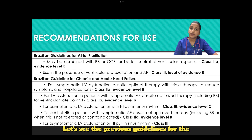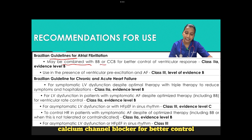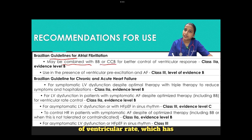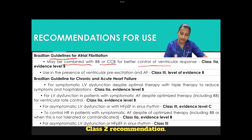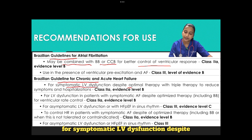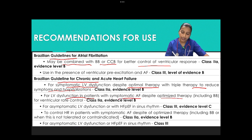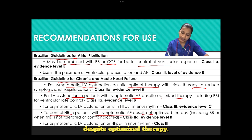Let us see the previous guidelines for the use of digoxin. According to the Brazilian guidelines for atrial fibrillation, it may be combined with beta blockers or calcium channel blockers for better control of ventricular rate, which has a class 2 recommendation. The Brazilian guidelines for chronic or acute heart failure state it can be considered for symptomatic LV dysfunction despite optimal triple therapy, to reduce symptoms and hospitalization, and for LV dysfunction in patients with symptomatic AF despite optimized therapy.